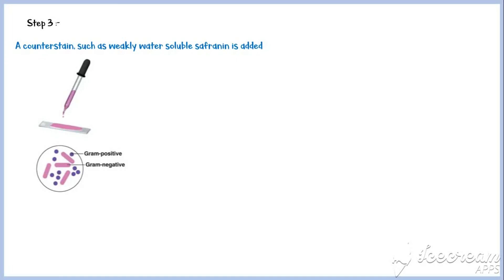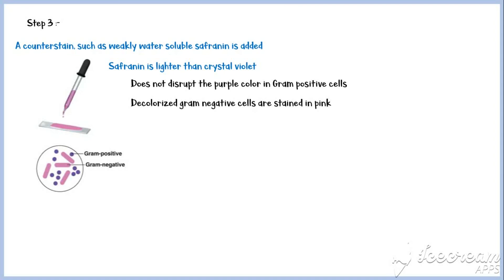In the third and final step, a counter-stain such as weakly water-soluble safranin is added. Safranin is lighter than crystal violet. Therefore, it does not disrupt the purple color in gram-positive cells. However, decolorized gram-negative cells will be stained in pink, as you can see in the magnified slide.